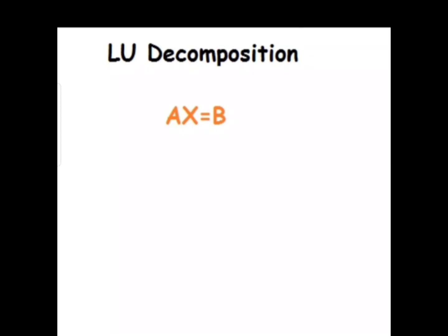In linear algebra, LU decomposition is used to solve systems of linear equations. LU decomposition can be done using the Kraut method or by the Doolittle method. As we have discussed the MATLAB code of the Kraut method in a previous video, today we are going to write the MATLAB code of the Doolittle method. The method of solution for both Kraut and Doolittle is the same; just the formation of matrices L and U is different.